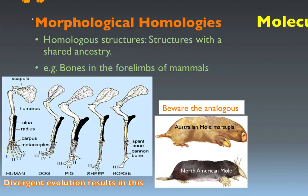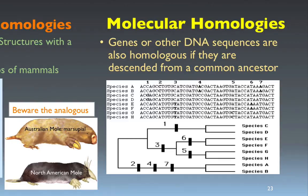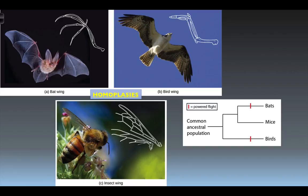Molecular homologies, on the other hand, are genes or other DNA sequences that are homologous because they descended from a common ancestor. Here we analyze the A's, T's, C's, and G's of different species. Typically, the more sequence that is common between two species, the more closely related they tend to be.